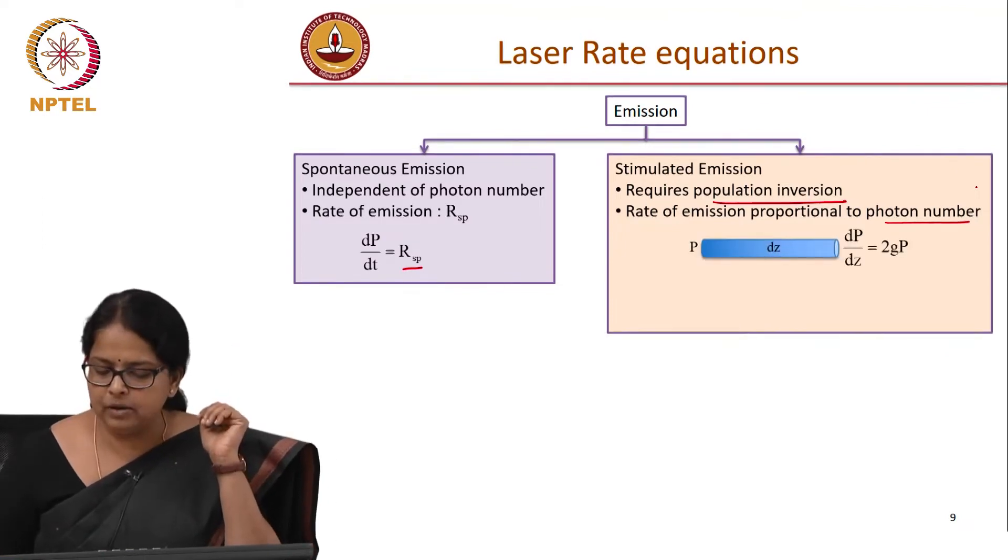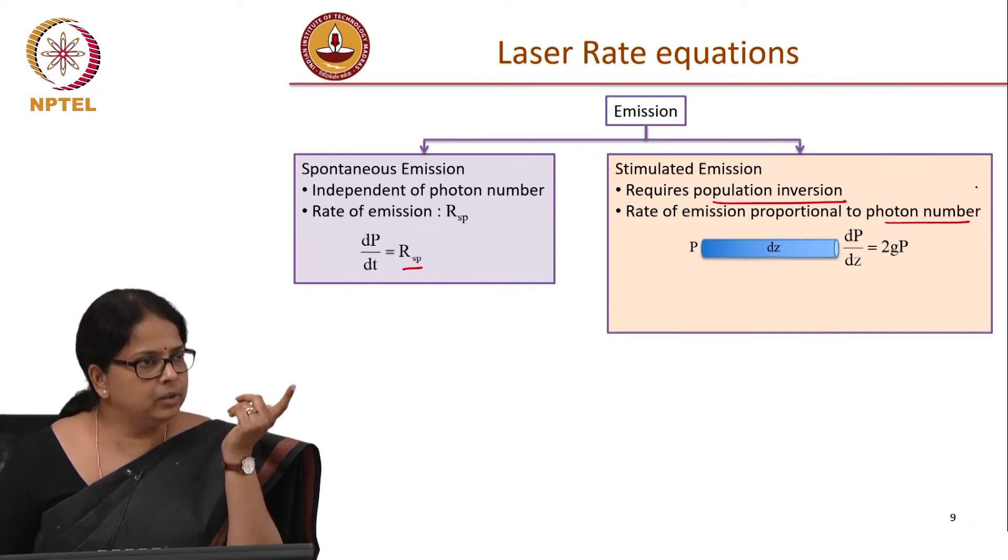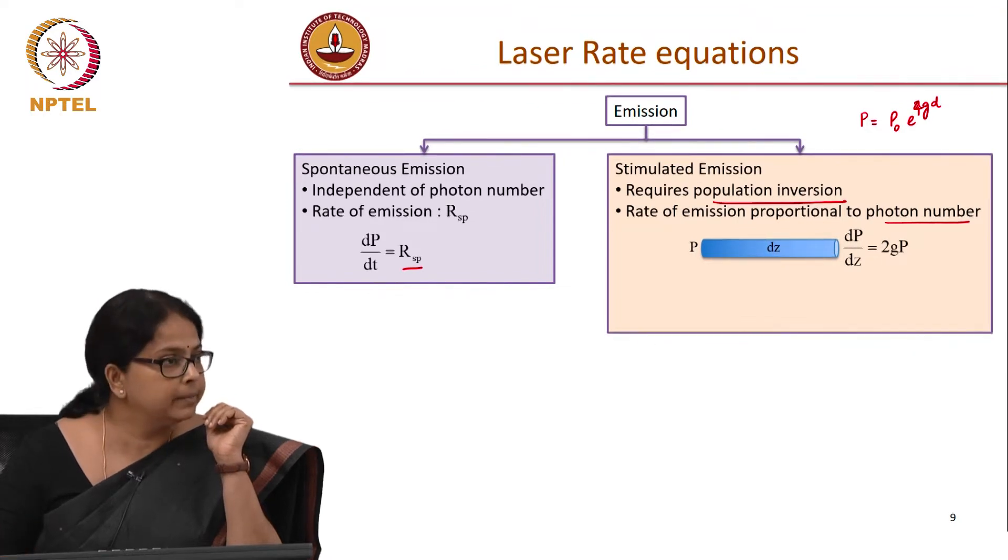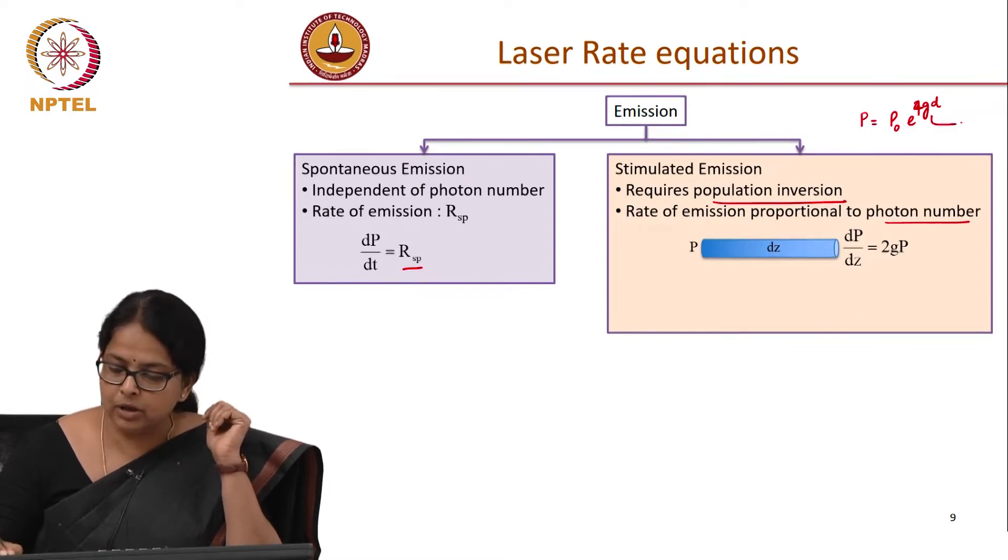So how do I now find out the rate of emission? I want to relate it to the earlier equation that we wrote. What did we write? We wrote that P is equal to some P naught e power 2gd, no, 4gd if it is power, right? If it is field, it was 2gd and we wrote what that g was, okay? How do I now relate it to, how do I write it as a dP by dt now?